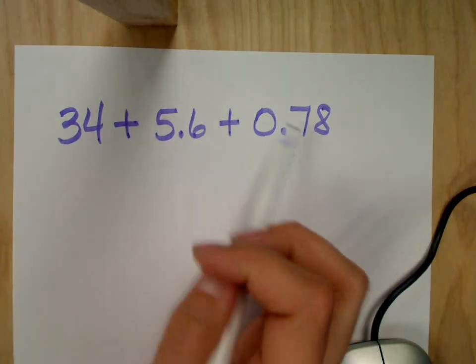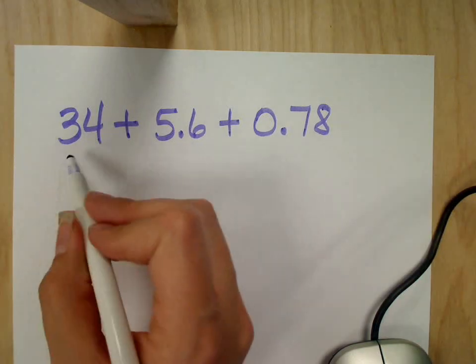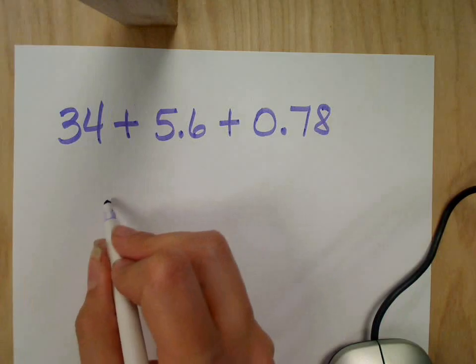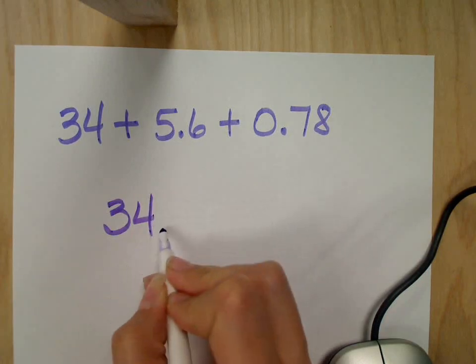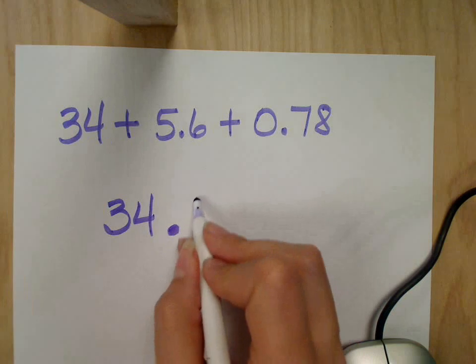So what's my rule about adding decimals? Line them up. So if this were like money, $34, how would I write that? $34 and my decimal goes where? At the end. And add two zeros. Okay, sure, let's add two zeros. Might as well.